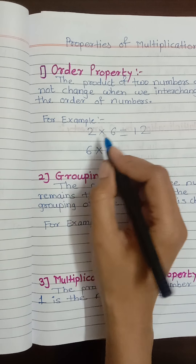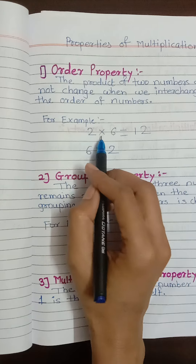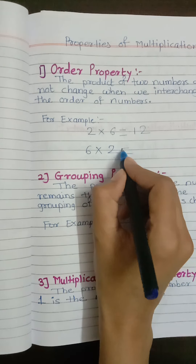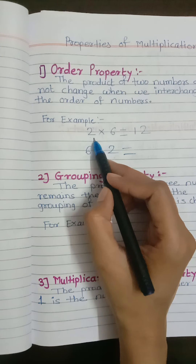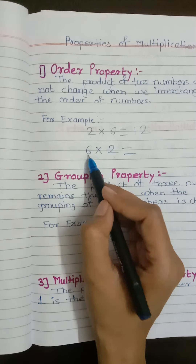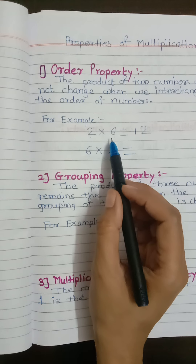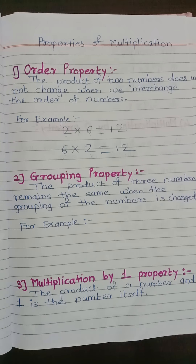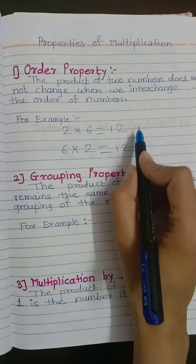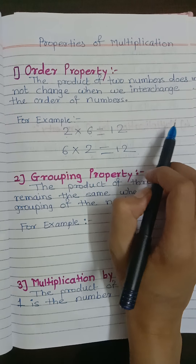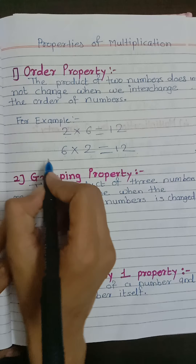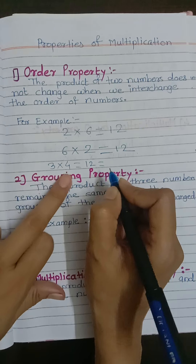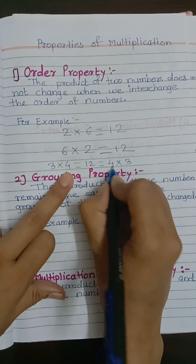We will change the order of numbers — 2 will be written where 6 was, and 6 where 2 was. So we write 6 in the place of 2, give a multiplication sign, and write 2 in the place of 6. Now 6 multiplied by 2 is also equal to 12. In both cases our product remains the same.